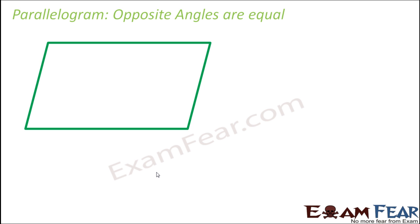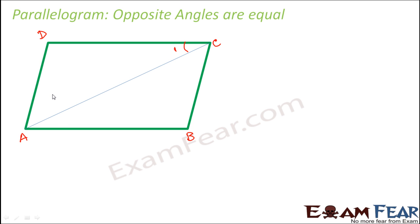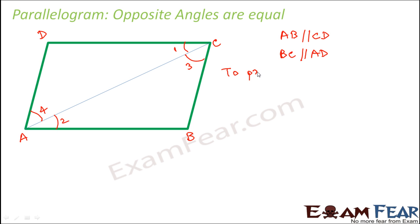Let us now prove that opposite angles are also equal. We almost proved it in the previous step, but let us see it once again. Name the parallelogram ABCD and draw diagonal AC. Label the angles: angle 1, angle 2, angle 3, and angle 4. By the definition of parallelogram, AB is parallel to CD and BC is parallel to AD. We want to prove that angle B is equal to angle D, which are the opposite angles.